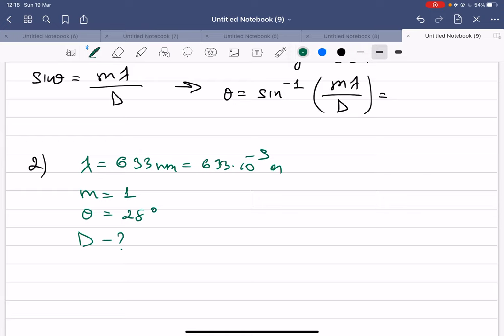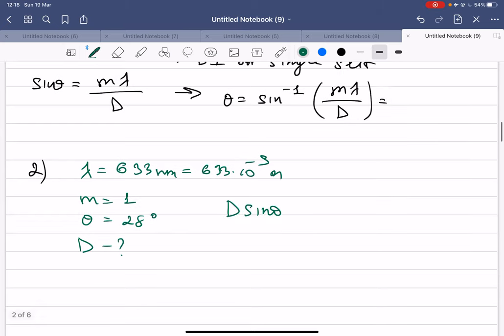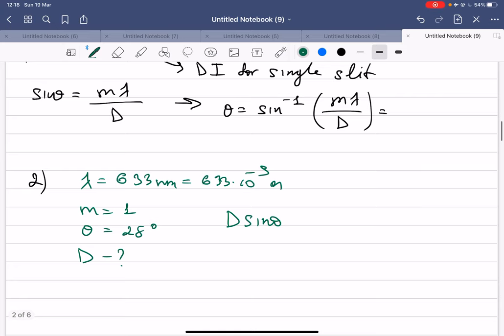Again we have a formula where D sine theta, which is the destructive interference from the single slit. This is your formula: m lambda. Okay, so from here D is equal to m lambda divided by sine theta.